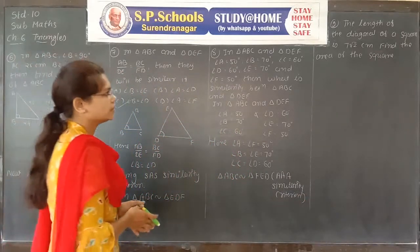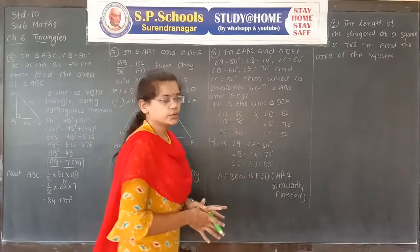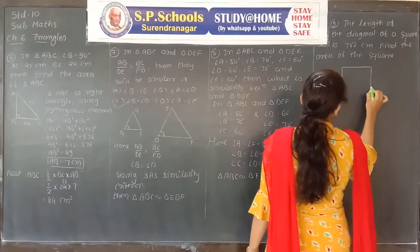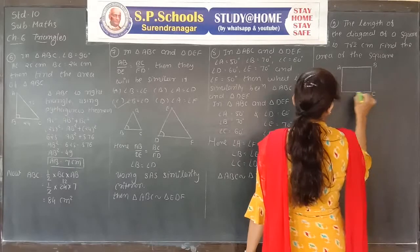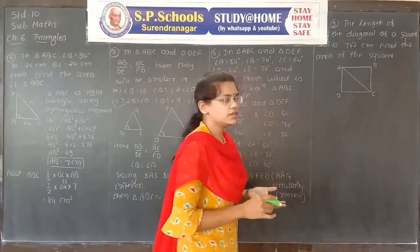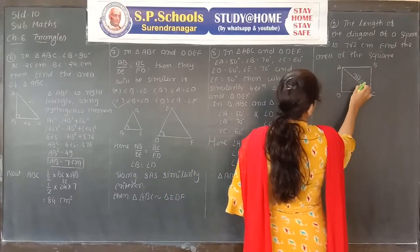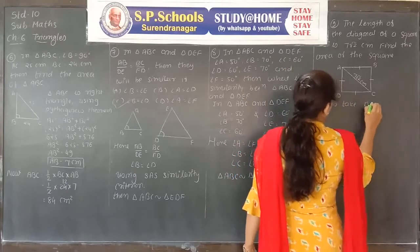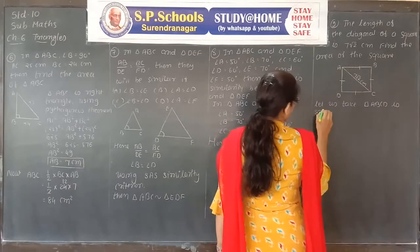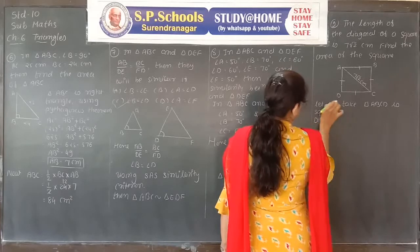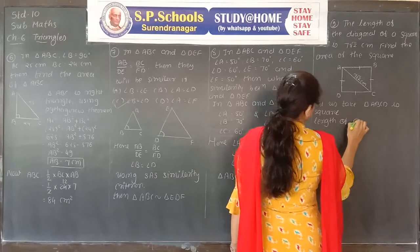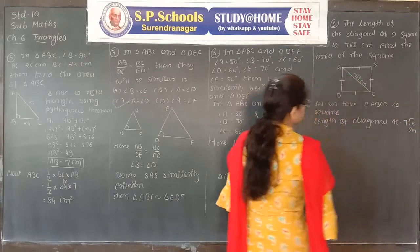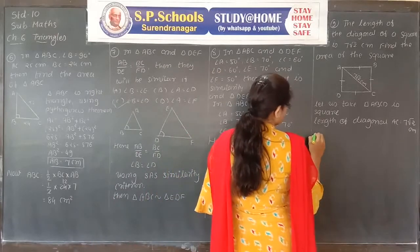Ninth problem: the length of the diagonal of a square is 7√2 cm. Find the area of the square. Let square ABCD have diagonal AC = 7√2 cm. All four sides are equal; let each side equal x. All angles are right angles.